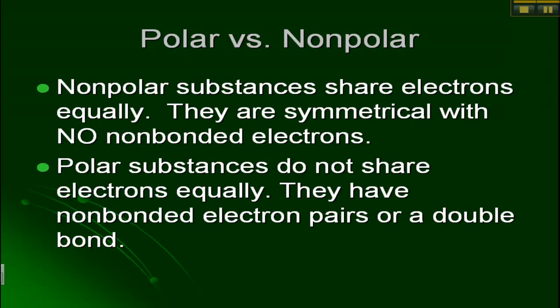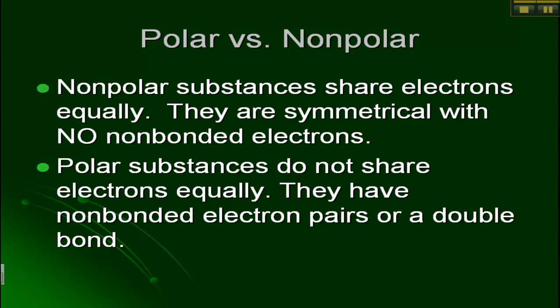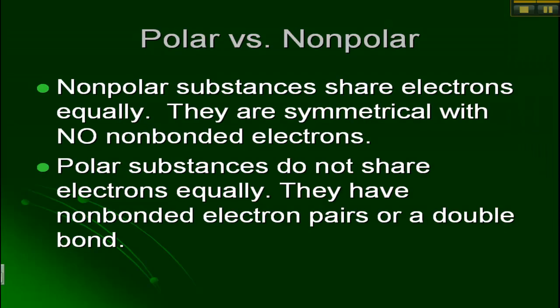So non-polar substances are going to share electrons equally. They're going to be symmetrical with no non-bonded electrons. Polar substances do not share equally. They will have non-bonded electron pairs or double bonds.